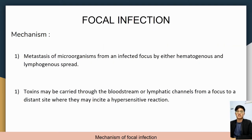Focal infection has two mechanisms. The first mechanism is metastasis of microorganisms from an infected focus by either hematogenous or lymphogenous spread. The second mechanism is that toxins may be carried through the bloodstream or lymphatic channels from a focal to a distant site, where they may incite a hypersensitive reaction.